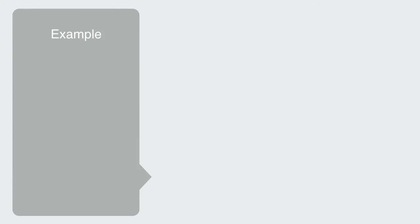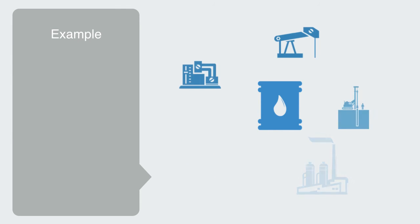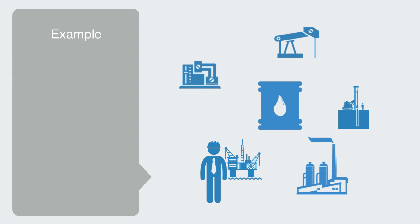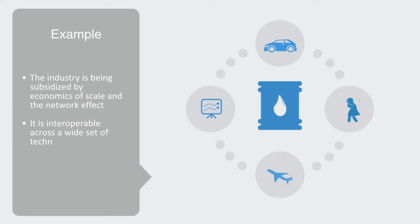An example of this is what is called carbon lock-in, referring to the self-perpetuating inertia created by large fossil fuel-based energy systems that inhibit the adoption of alternative energy technologies. Now that we've built up sophisticated machinery for extracting and processing petroleum, and the combustion engine has become a default technology, the industry is being subsidized by economics of scale and the network effect. Because of historical events, we can produce a barrel of oil very cheaply, and a barrel of oil is interoperable across a wide set of technologies — from making raincoats, to greasing your car's wheels, to trading on the futures market — giving it the network effect, an attractor, and creating inertia.